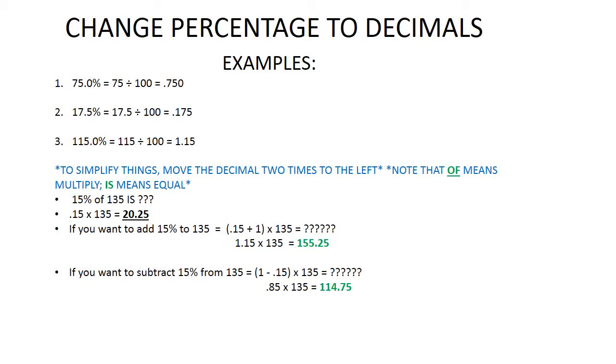Pretty simple. Seventy-five percent equals seventy-five divided by one hundred, which equals point seven five zero. Or it's probably easier to do if you just take seventy-five and move the decimal two times to the left.